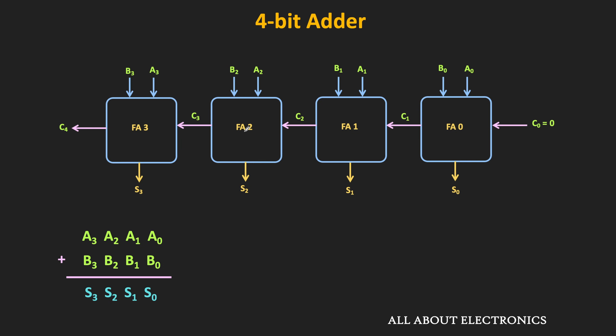Let's take two four-bit numbers and add them using this four-bit adder. A0 and B0 are 0 and 1, and the carry C0 is set to zero for the LSB addition. The first full adder gives sum bit S0 = 1 and carry C1 = 0. For the next adder, A1 = 1 and B1 = 0, so sum S1 = 1 and carry C2 = 0.